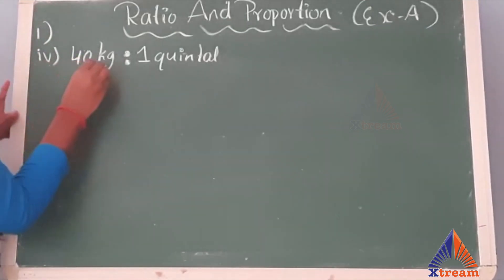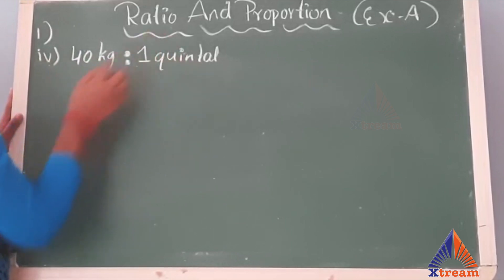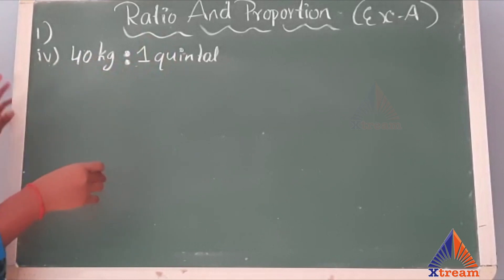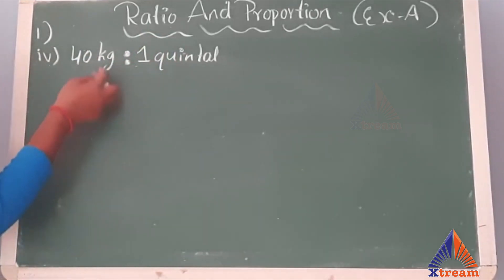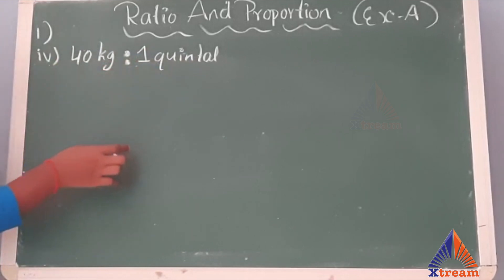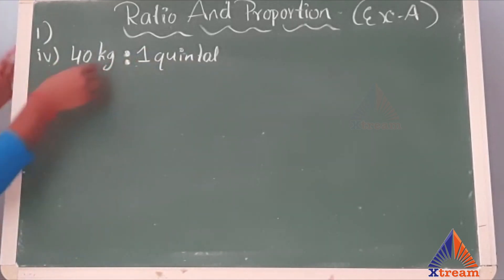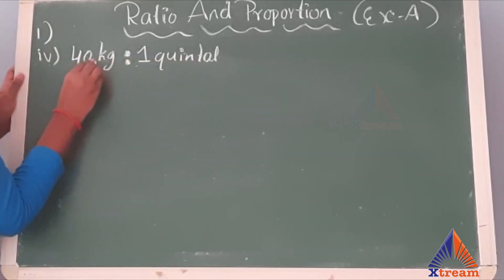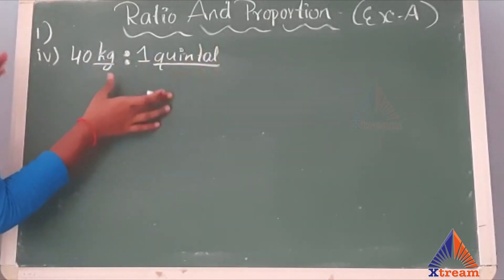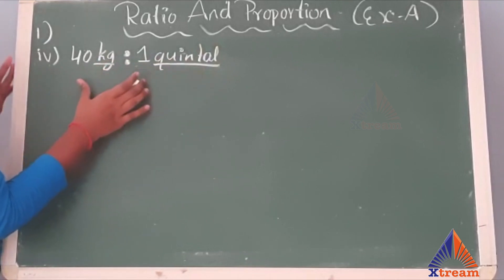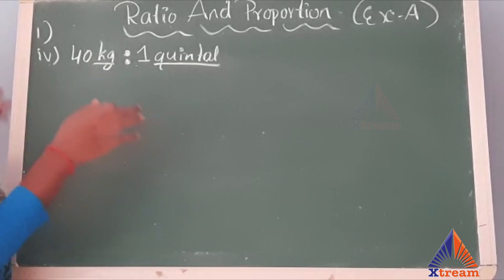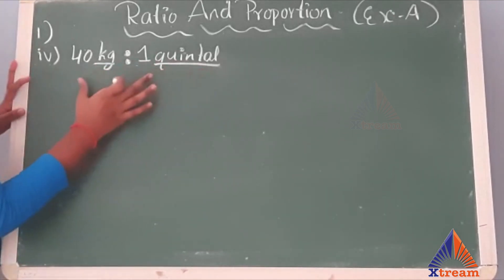The fourth sub-question has 40 kg and 1 quintal, and they are asking us to simplify this ratio. To simplify a ratio, we should first write it in fractional form and then cancel. But we cannot do that directly because the units are different — here the unit is kg and here the unit is quintal. So first we need to convert both quantities into the same unit.